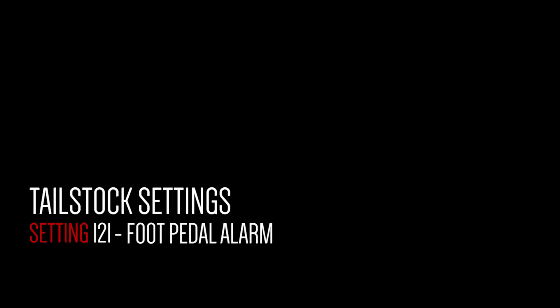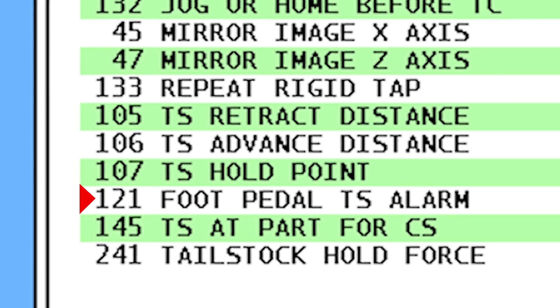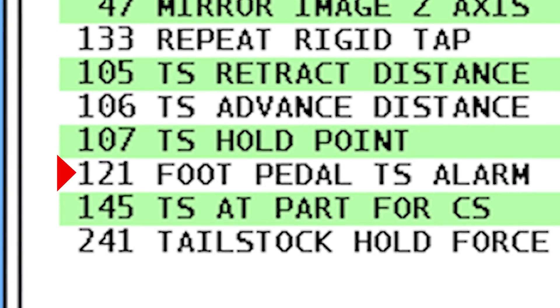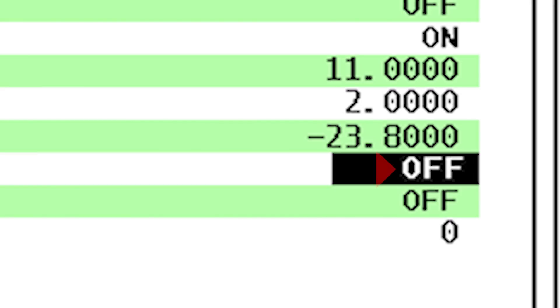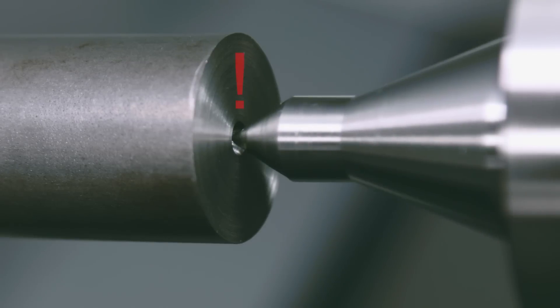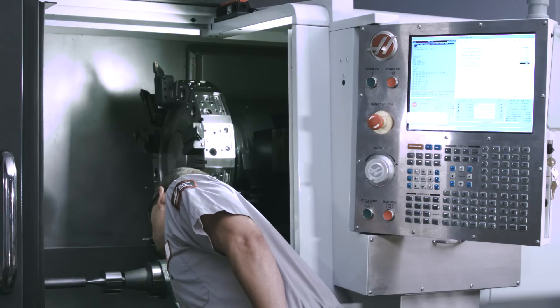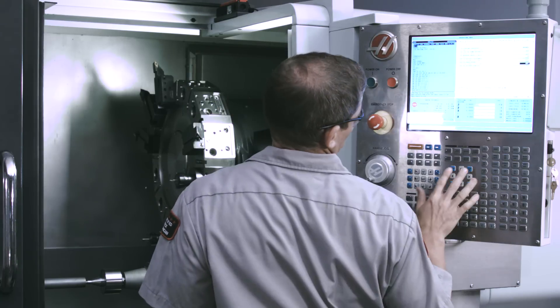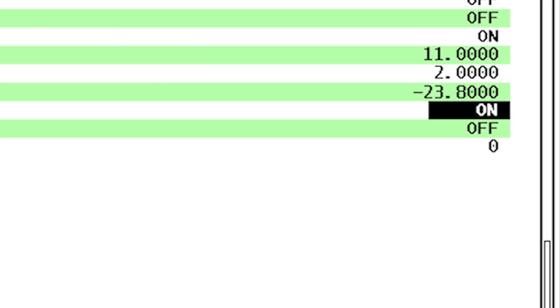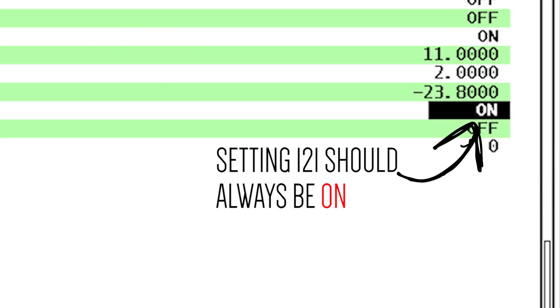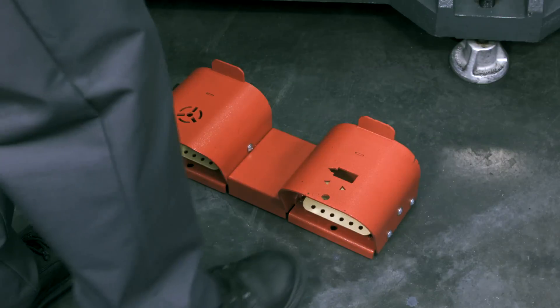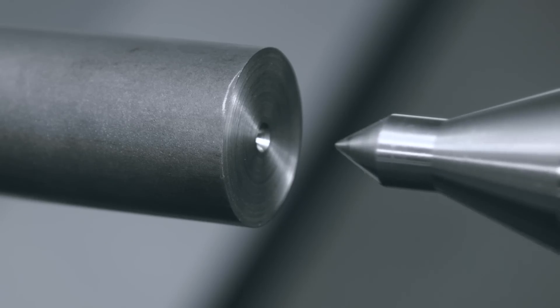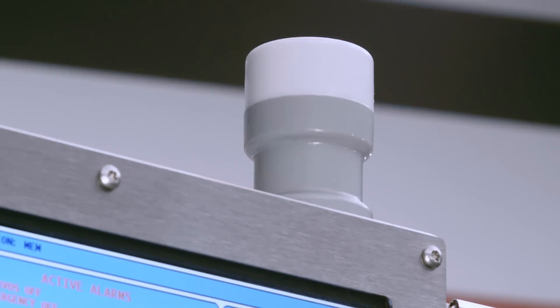Next, we've got setting 121. This is also important. When you use the foot pedal, setting 121 warns you when the tailstock is not clamping the part. Pretty handy. With setting 121 set to off, the tailstock moves to the 107 position, but it doesn't check if it's reached the part. So if your part isn't in the right place, the tailstock may not actually be clamping the part. That's why we recommend setting 121 should always be set to on. That way, any time the tailstock is activated, whether by a program or with the foot pedal, it will fault out if it doesn't find a part.